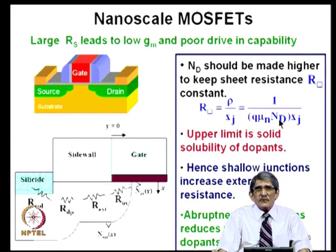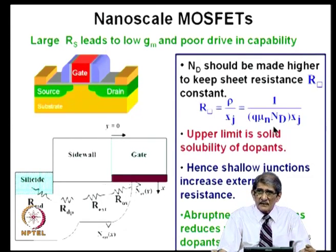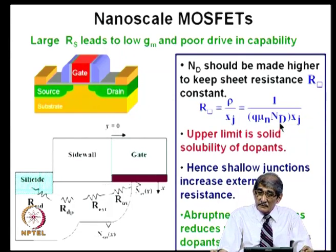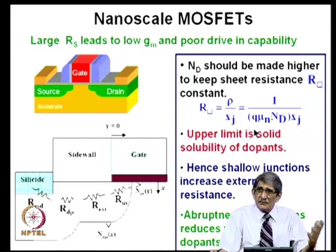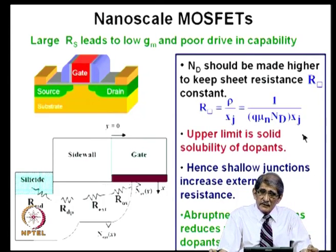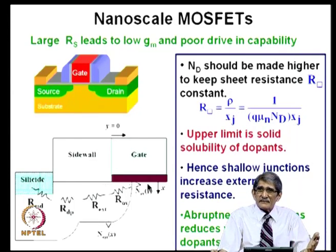For p-type with boron, solid solubility is about 10^20 per cm³. There is an upper limit on doping concentration. So the only way to reduce that resistance further is to go to a different material — change over from semiconductor to metal. Metal will have a carrier concentration of order 10^22 or more. So you can greatly increase carrier concentration, reduce resistivity, and reduce series resistance. That is the goal.